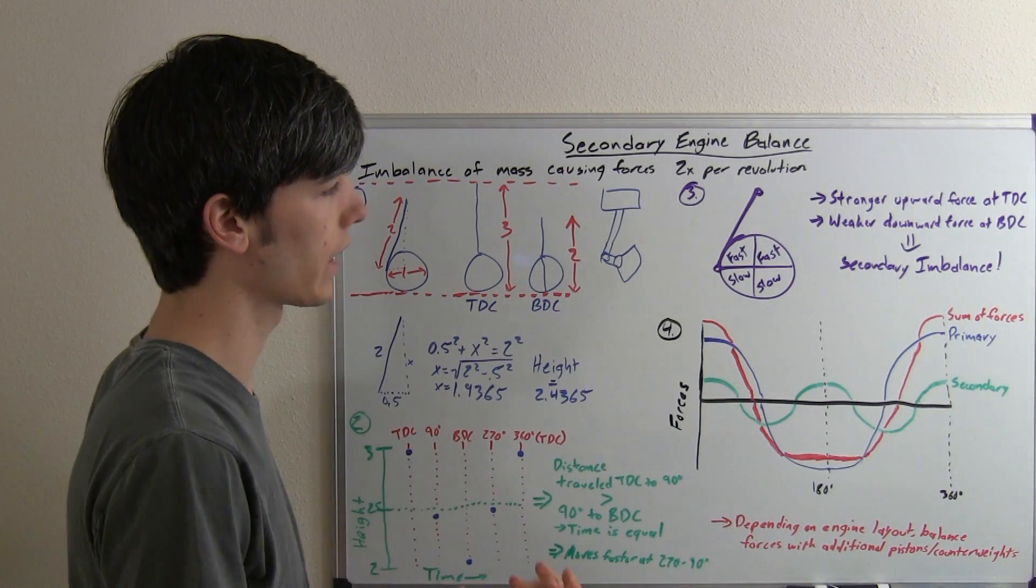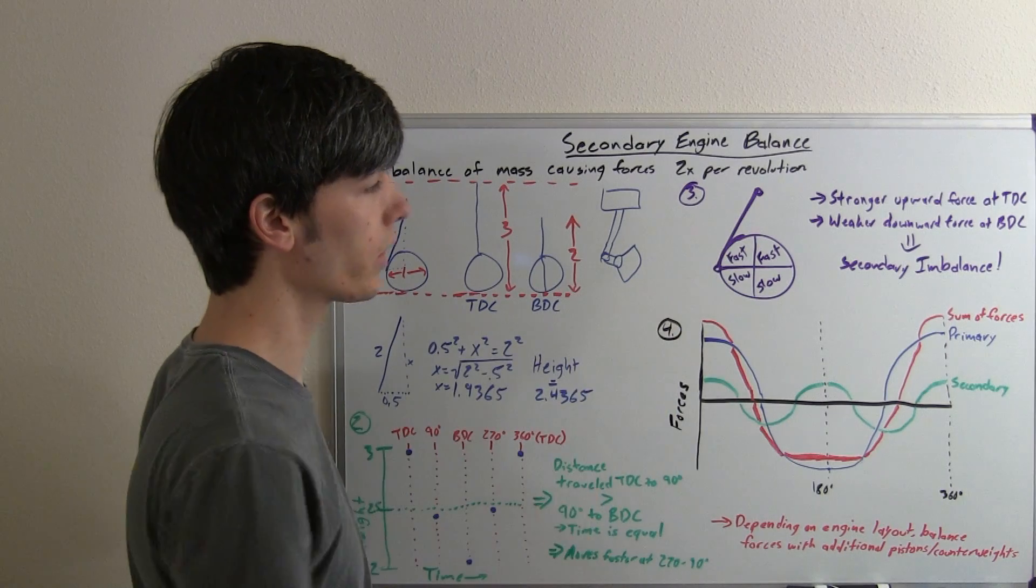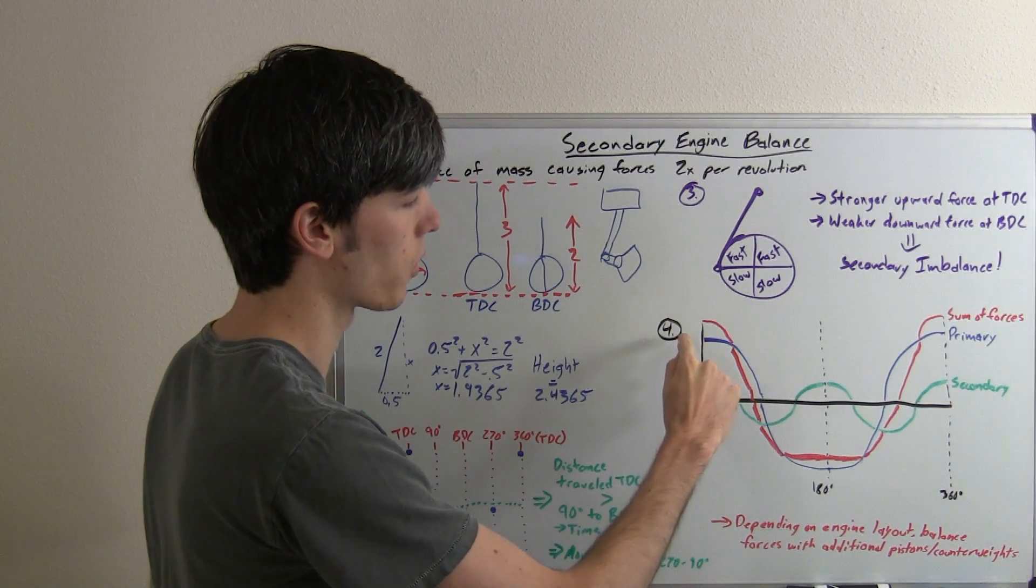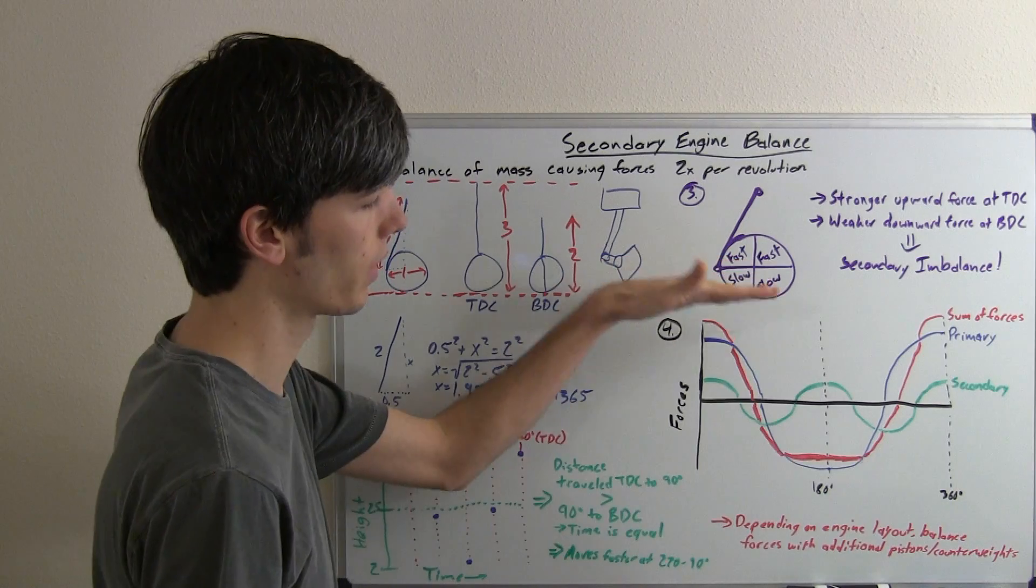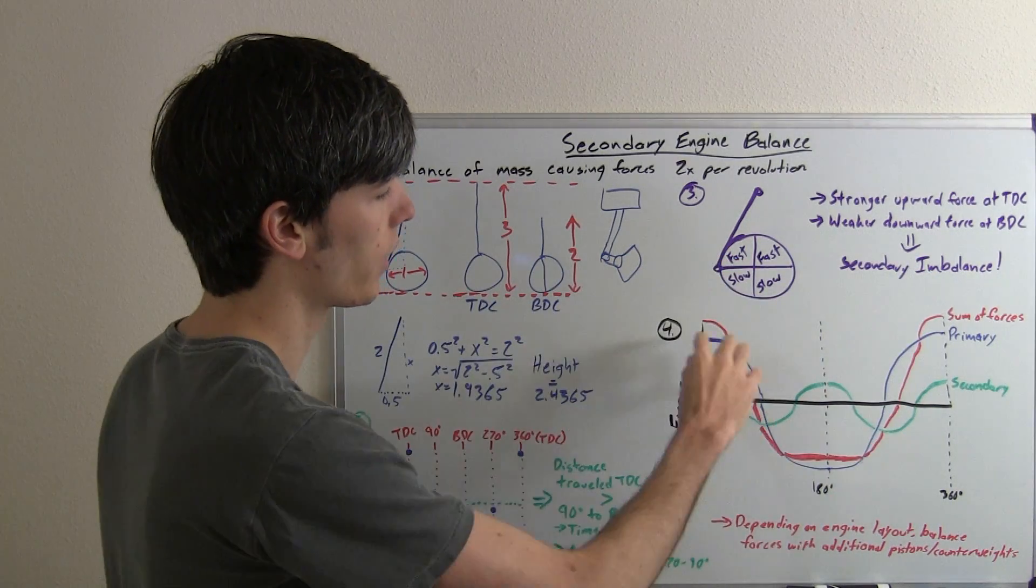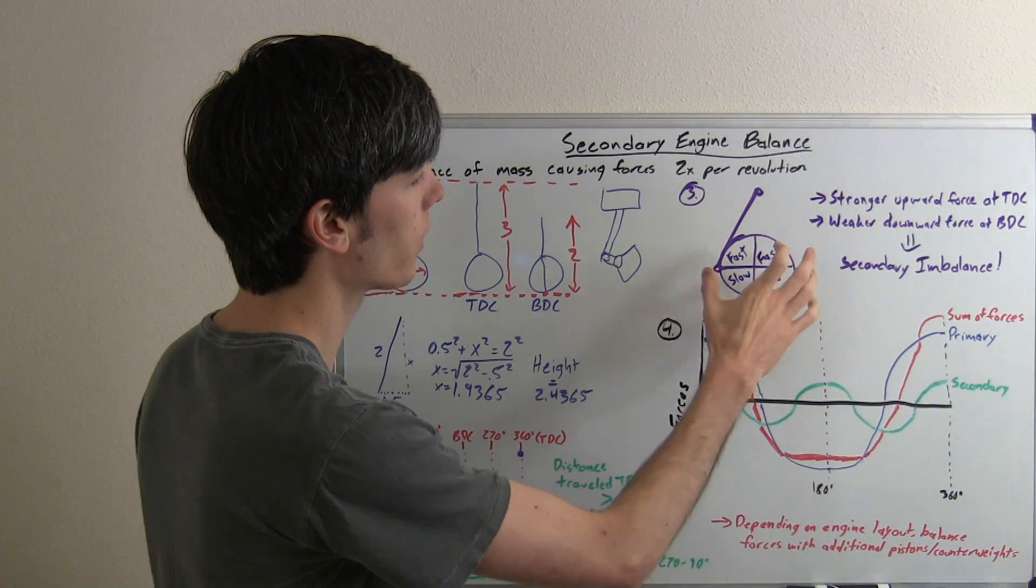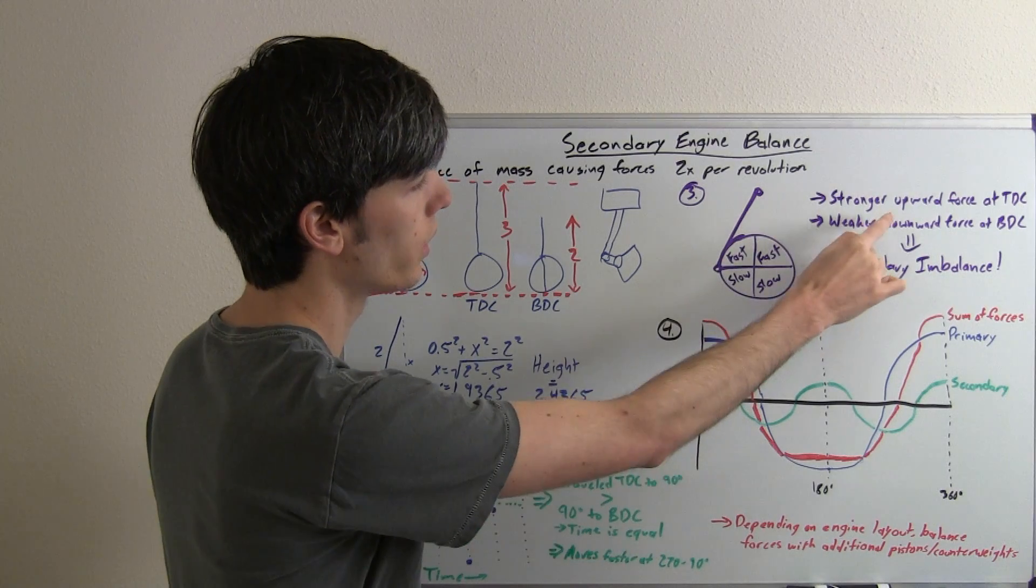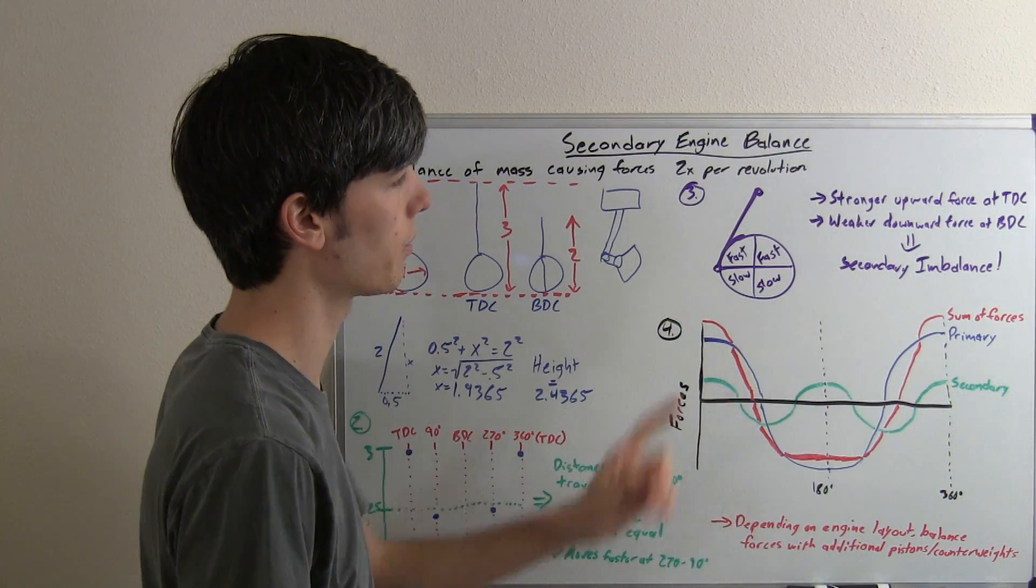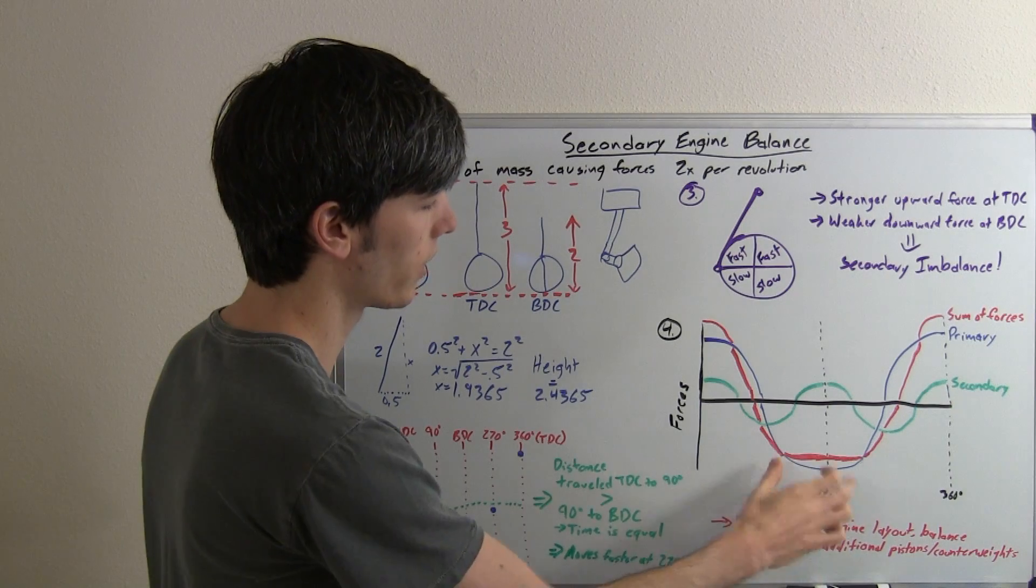So, what does this look like if you graph it? Well, we already know from our previous videos what the primary forces look like. You've got this simple curve as the piston goes up, and then down, and then up, and you have this curve. Well, because of these secondary forces, we know we have a stronger upward force at top dead center, and a weaker downward force at bottom dead center.